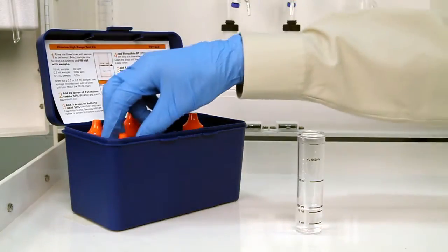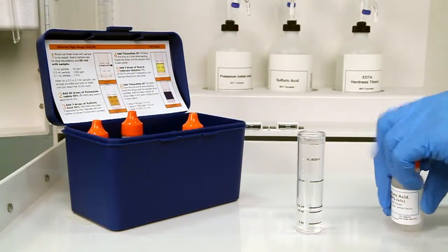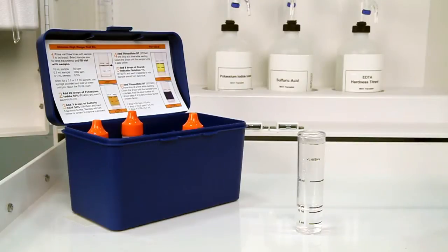The next step is to add three drops of sulfuric acid 50%. Remember to hold the bottle vertically to get a consistent drop size.